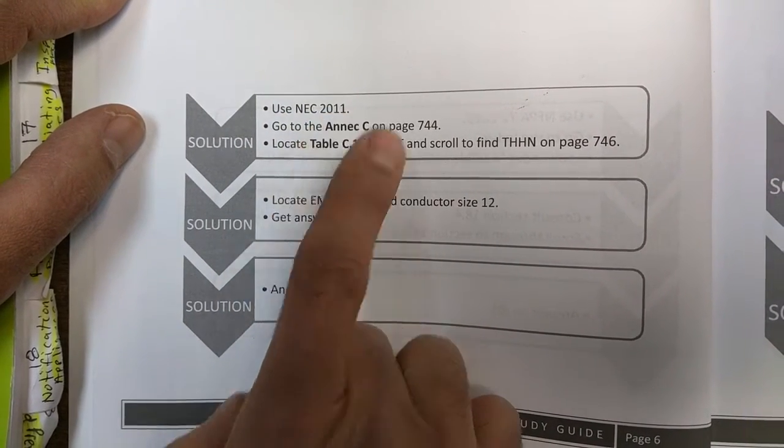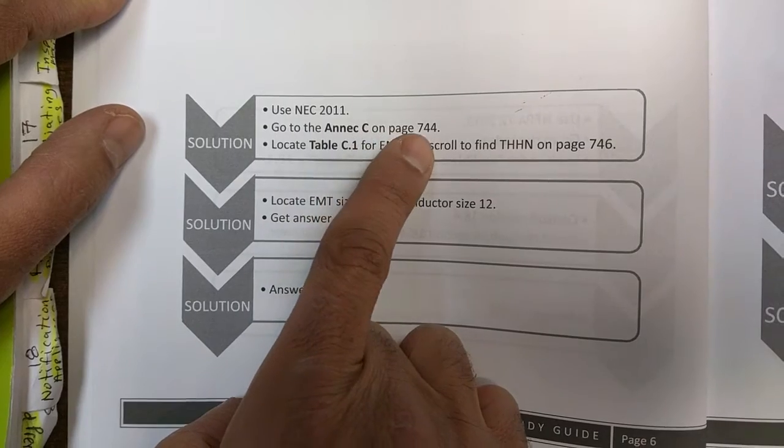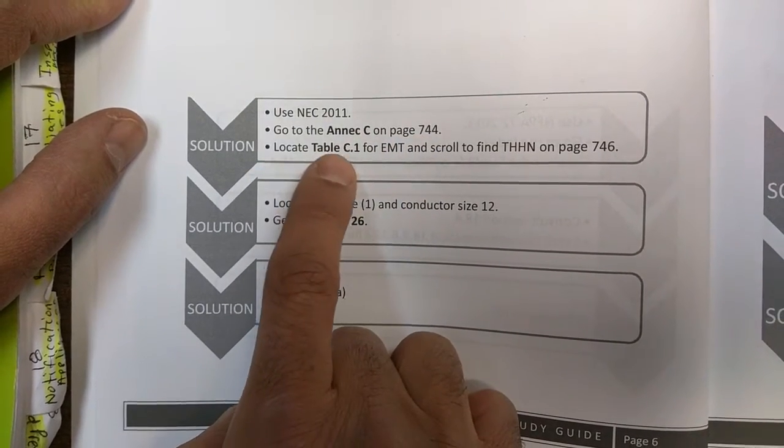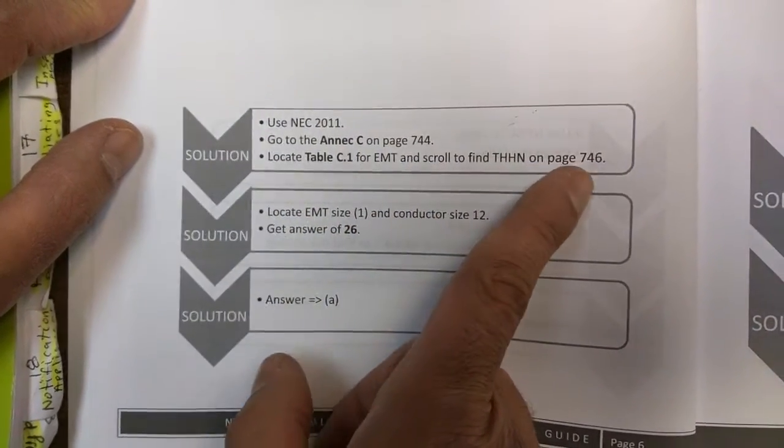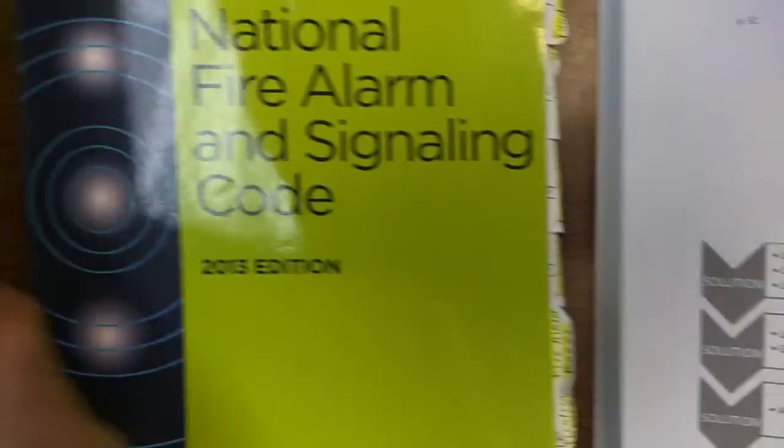Use NEC 2011. Go to Annex C on page 744. Locate table C1 for EMT and scroll to find THHN on page 746. That's basically what we're going to do.